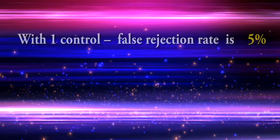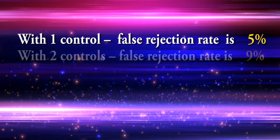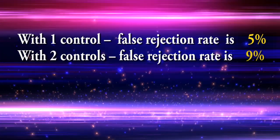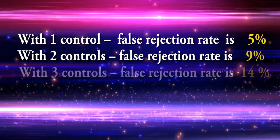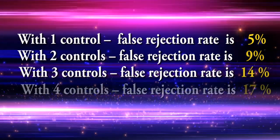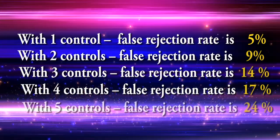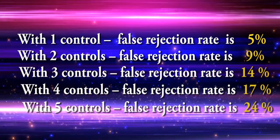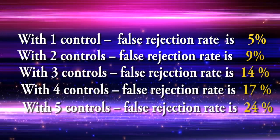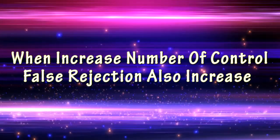The false rejection rates increase with the number of controls: with one control, the false rejection rate is 5%; with two controls, 9%; with three controls, 14%; with four controls, 17%; and with five controls, 24%. As the number of controls increases, the false rejection rate also increases.